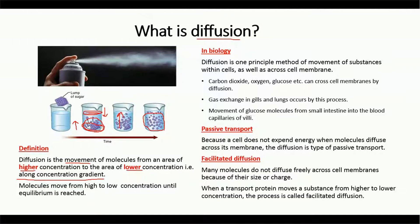When we talk about equilibrium, it means that the molecules present at the base of the glass are the same as those present at the top of the glass. So equilibrium is achieved by the process of diffusion. Diffusion is very important in biology.